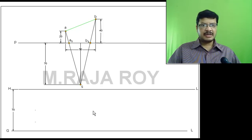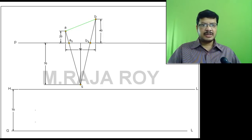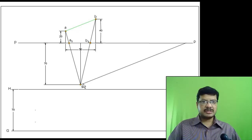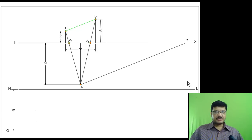The next step is to obtain the vanishing point. To get the vanishing point, draw a line parallel to the given line and passing through the station point. This line will intersect with the picture plane at a point — this point is small v. From this point, draw a projector onto the horizon line. This is the required vanishing point, capital V.